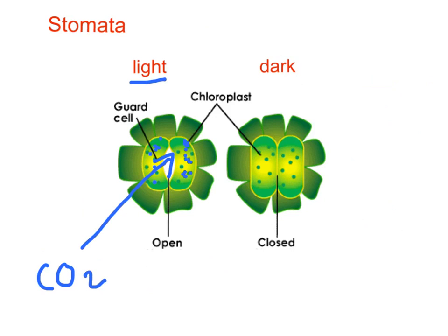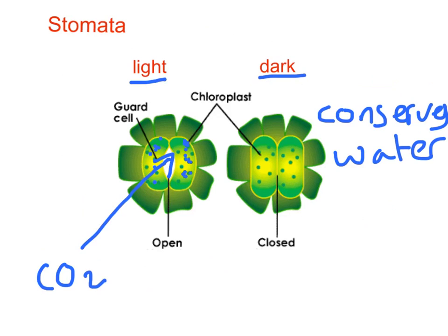During the day, light starts photosynthesis, the guard cells swell up, and carbon dioxide can get in to be used for photosynthesis. But in the dark, photosynthesis stops. The reason the stoma closes at night is that if it remained open, the plant would lose water. So by closing the stoma, the plant conserves water and keeps it inside the leaf for use in photosynthesis the next day. The stomata open during the day to let CO2 in, and close at night to conserve water.